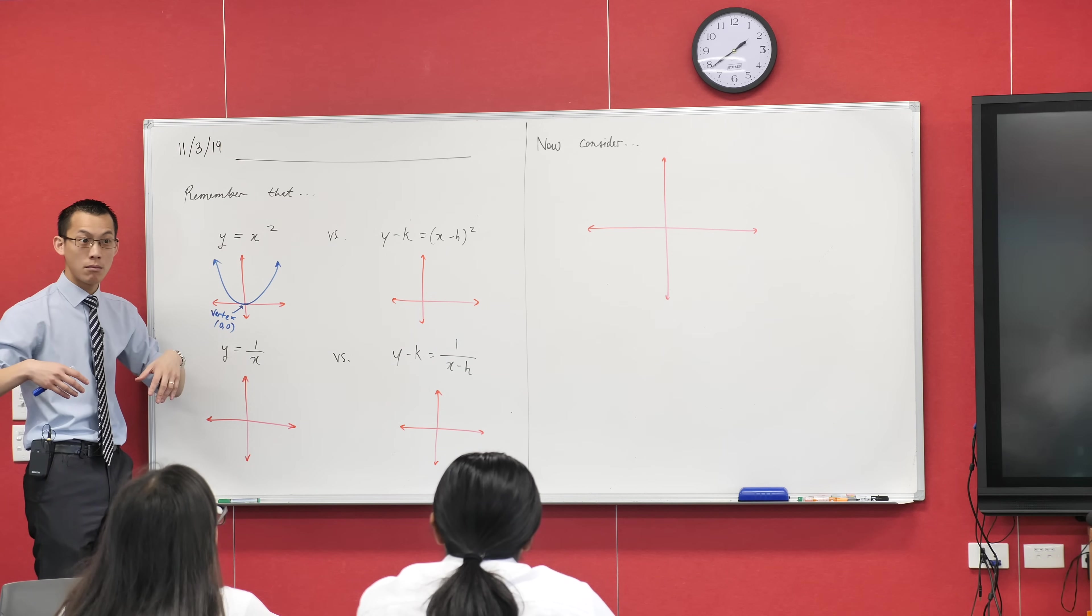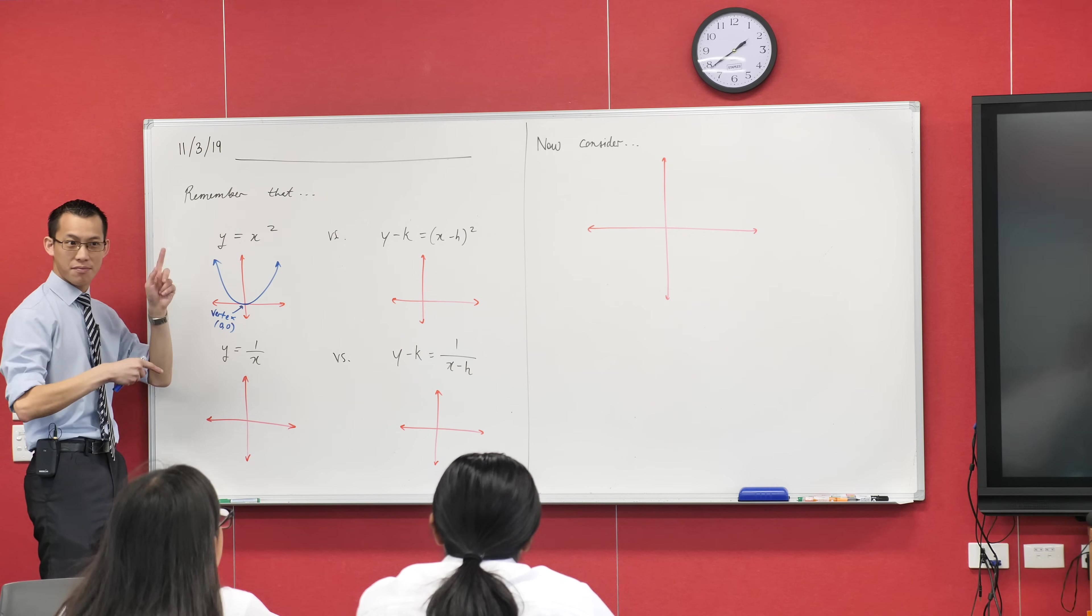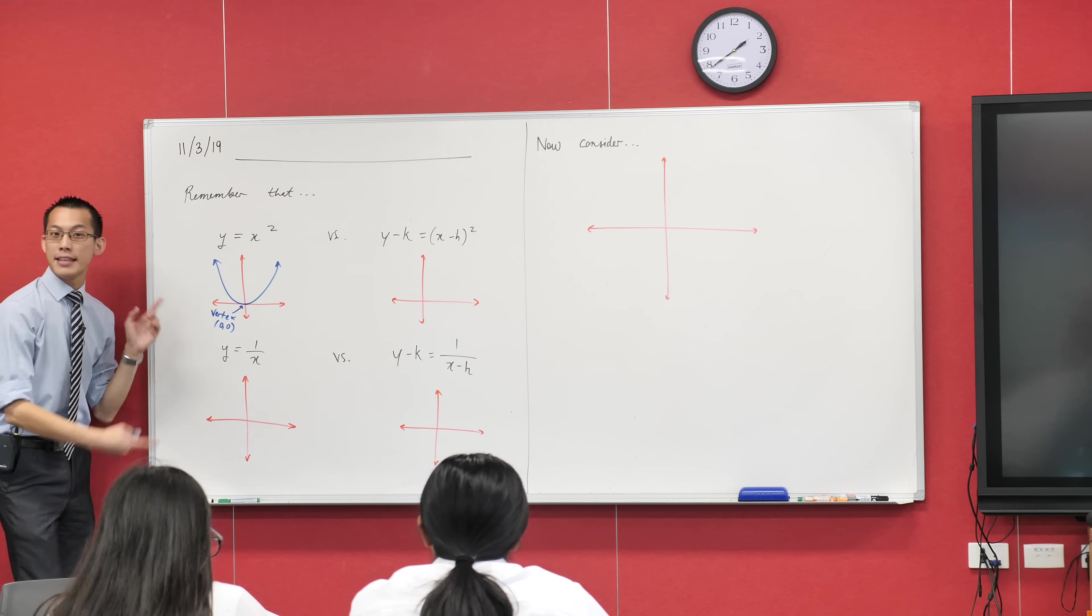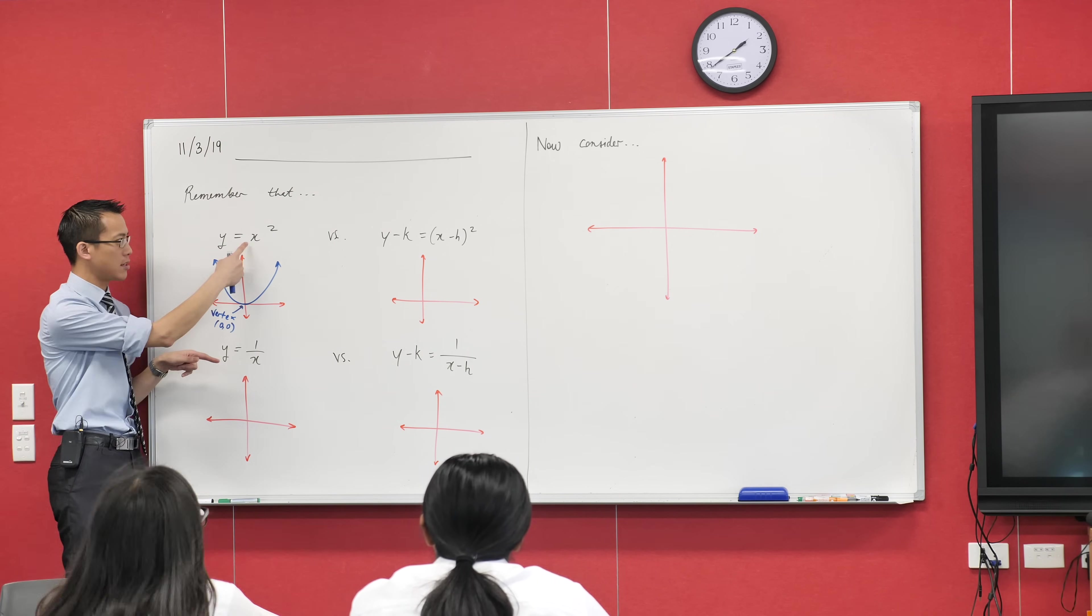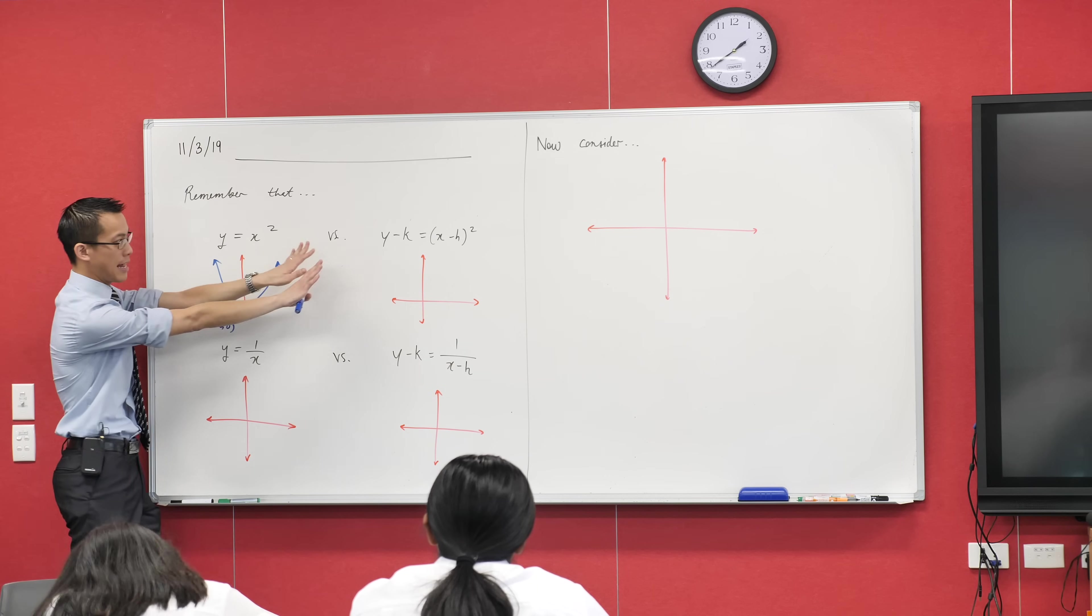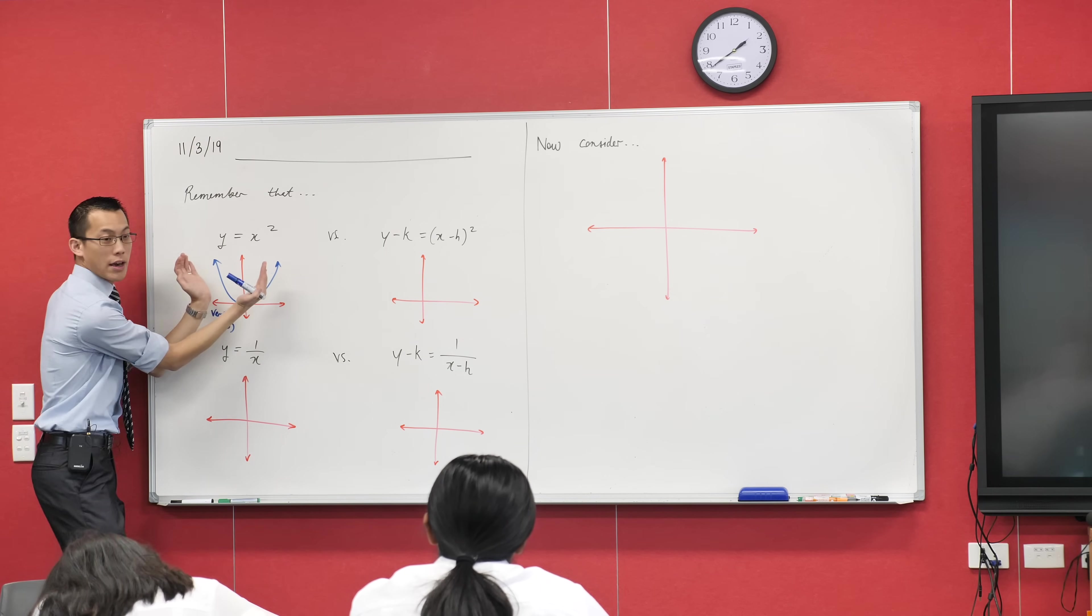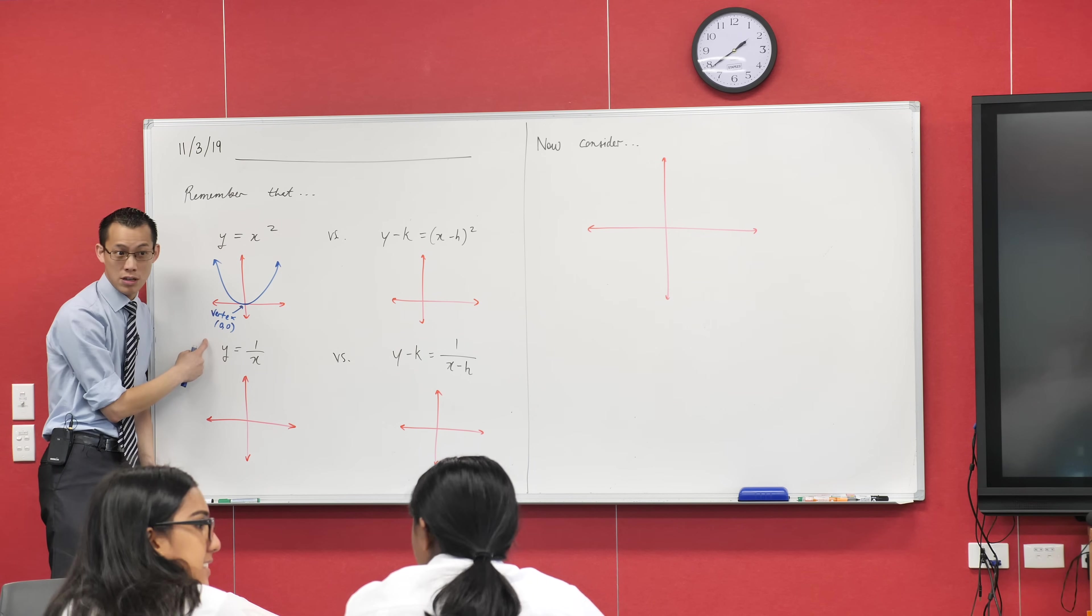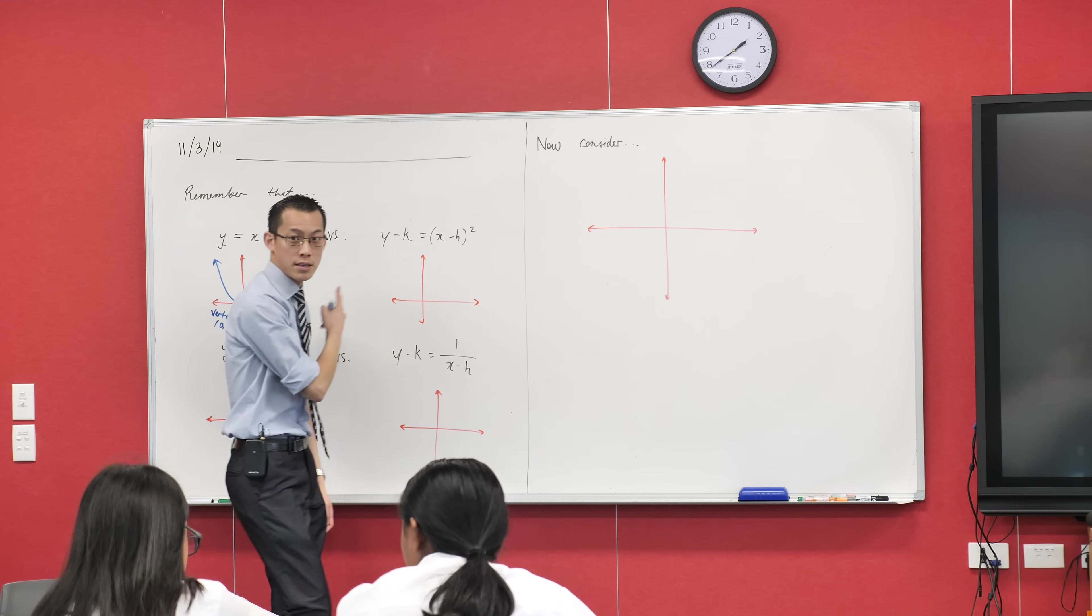What kind of way do this k and the h change this parabola? Does it change whether it's facing up or down? No. How would I change this? What would I do if I wanted to face down? Yeah, I'm gonna put a minus sign here or here. Okay, so that has not happened, so it's still gonna be facing up. But the vertex is no longer gonna be at 0,0, is it?